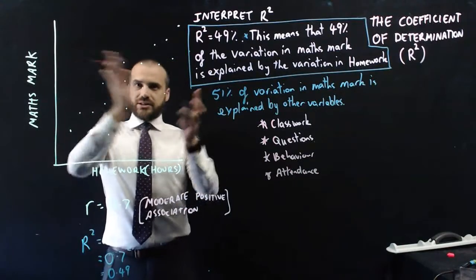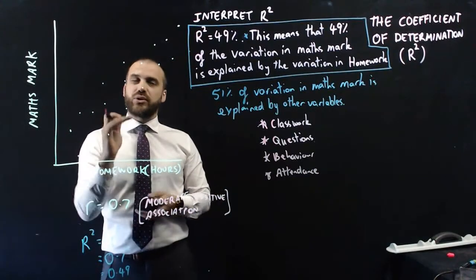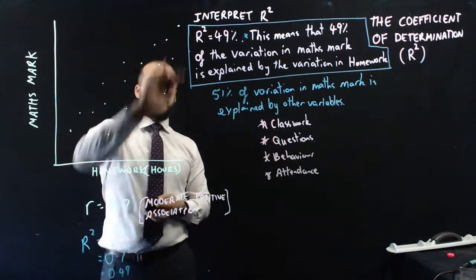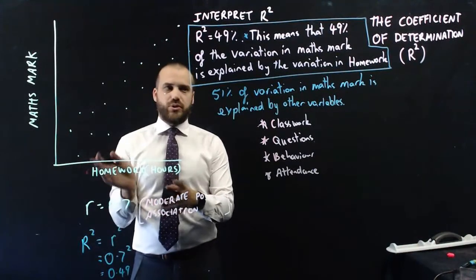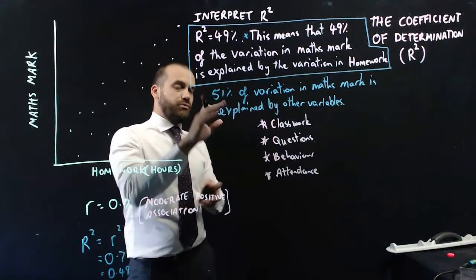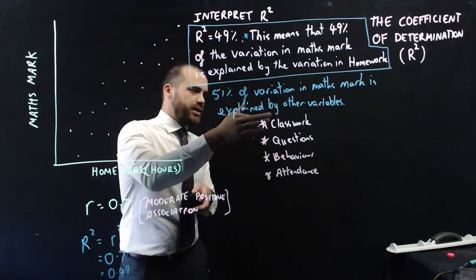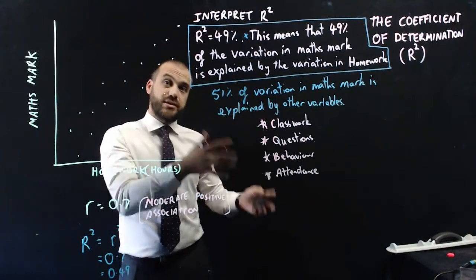But what my analysis here has said is that 49% of the variation in MathsMark is accounted for just by doing your Homework. The 51%, the remaining 51%, could be accounted for by any number of these things.